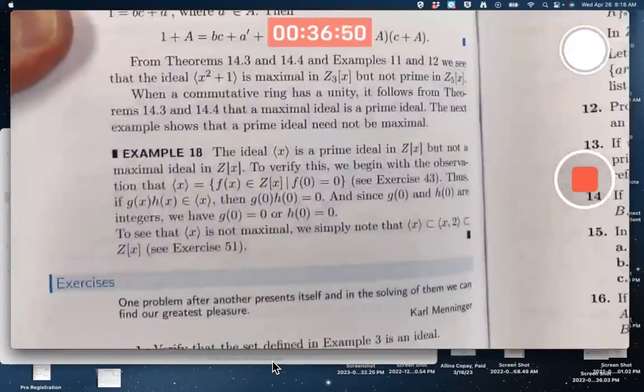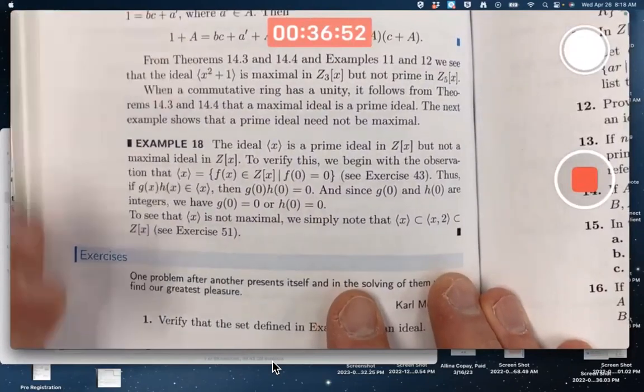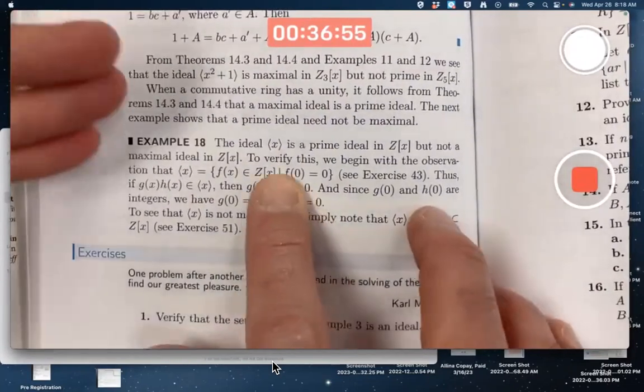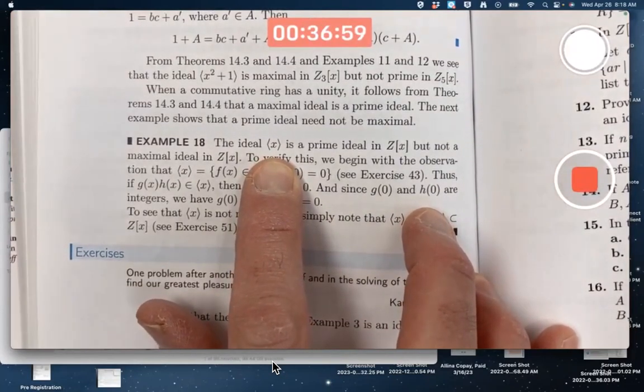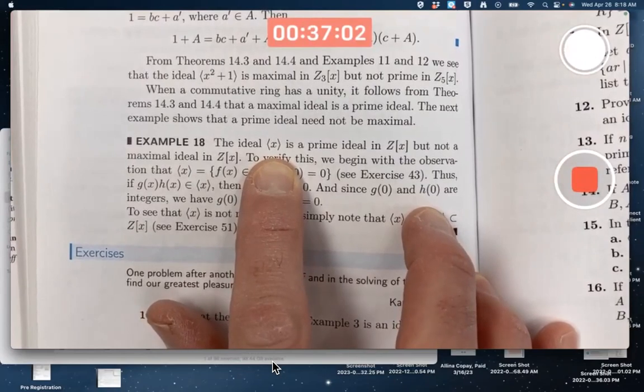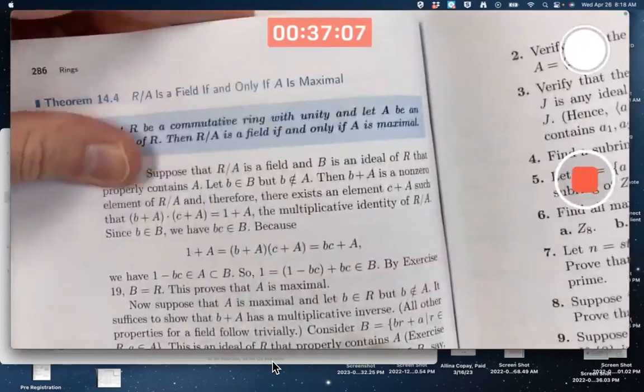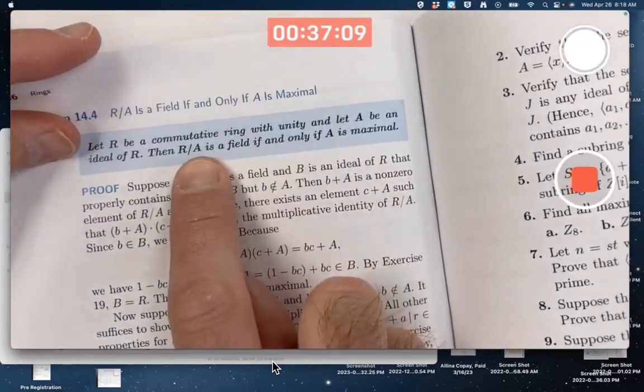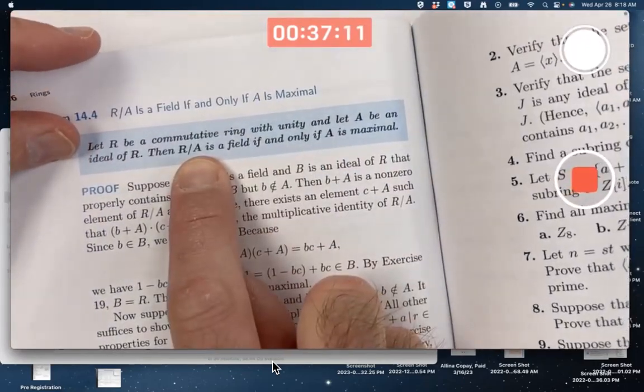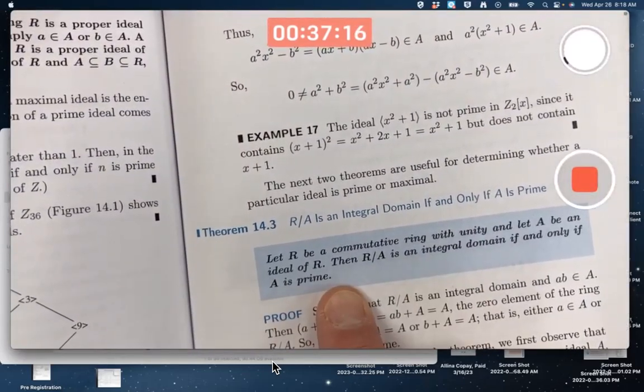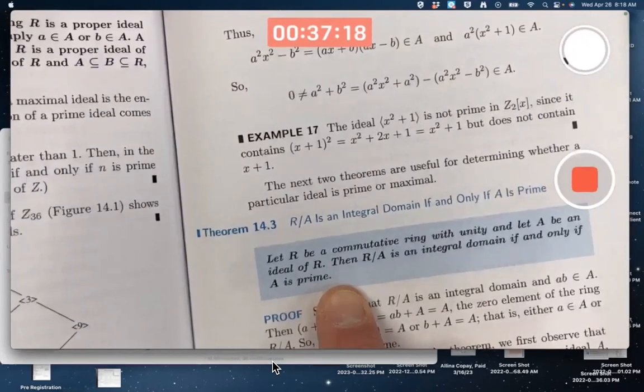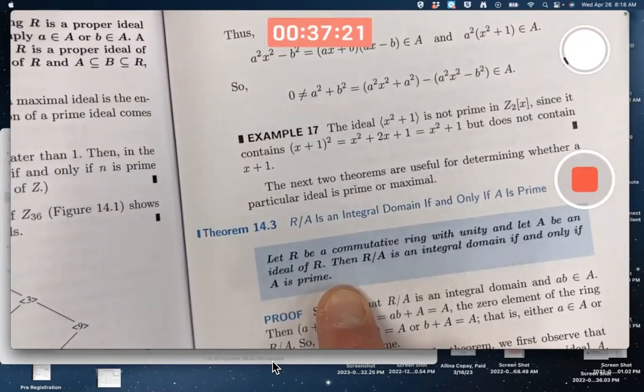Example 18 is pretty important to think about. This is an example of an ideal that's a prime ideal but not a maximal ideal. I said this before: all maximal ideals are prime ideals. Very easy proof of that. If A is maximal, the factor ring's a field, which implies the factor ring's an integral domain, which implies A is prime. Done.